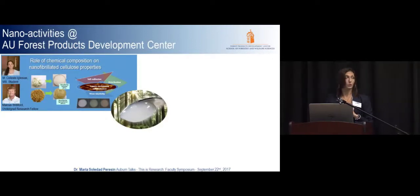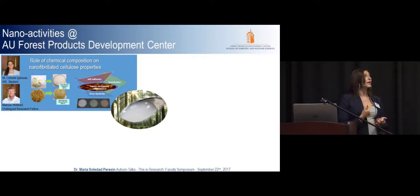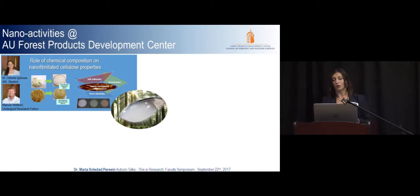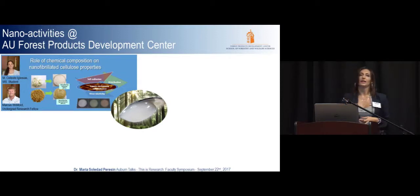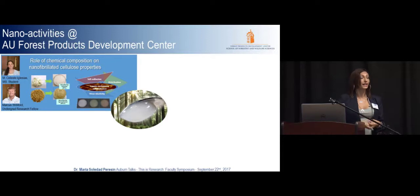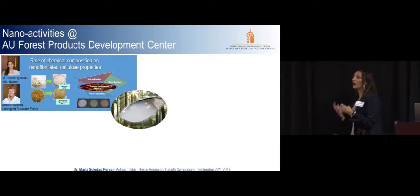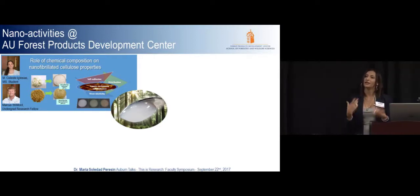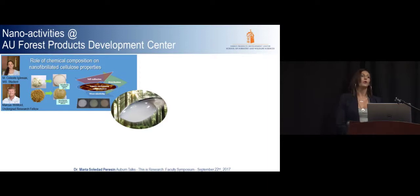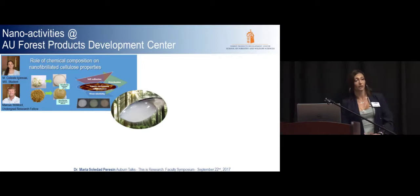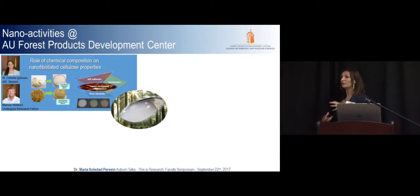Let me briefly describe the activities we are developing at the Forest Product Development Center, the School of Forestry and Wildlife Sciences, together with other departments on campus. One of our main projects looks at cellulose that still contains hemicellulose and lignin, examining how different compositions of nanocellulose impact the final application. Instead of making nanocellulose and finding applications later, we start with the target application and determine what properties are needed — we can leave the lignin to make it more hydrophobic, or retain the hemicellulose to make it more flexible.